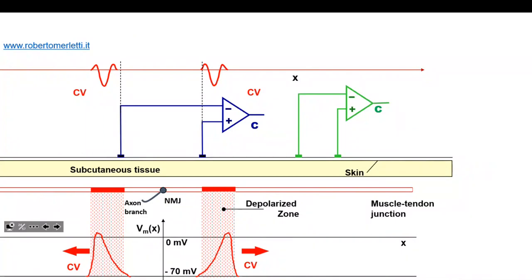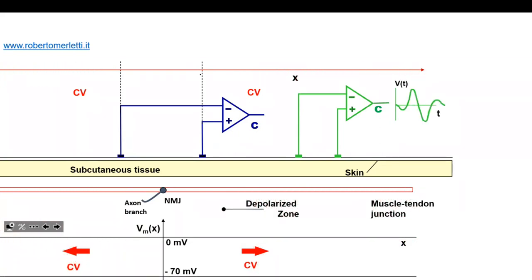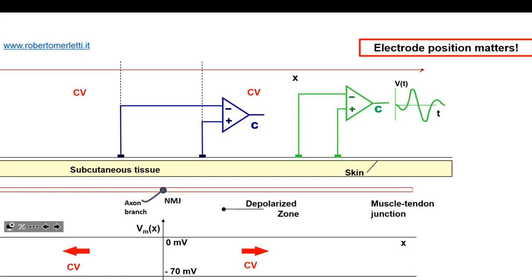If you place two surface electrodes equidistant from the neuromuscular junction, you get zero signal despite electrical activity, because the signals going to the right and to the left cancel each other. But if you place the two electrodes on the same side of the innervation zone, you are able to detect electrical signals. So electrode position matters, and usually with bipolar electrodes you place them on the same side of the innervation zone.